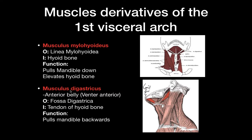Then you have the musculus digastricus. It has an anterior belly and a posterior belly. Only the anterior belly is part of the first visceral arch; the posterior one is part of the second visceral arch. The anterior belly of the musculus digastricus sits on the fossa digastrica on the mandible and inserts at the tendon of the hyoid bone. The function of this belly is to pull the mandible backwards.